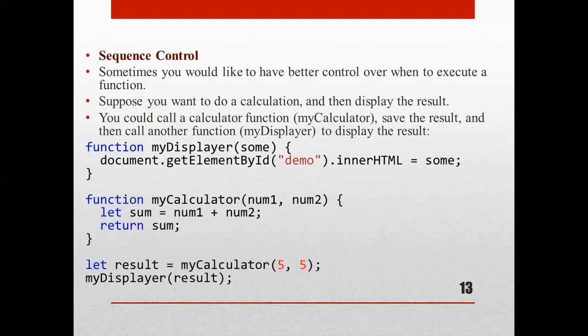Next is sequence control. Sometimes you would like better control over when to execute a particular function. For example, if you want to do a calculation and then display the result, you could first call a calculator function like myCalculator, save the result, and then call another function like myDisplay to display the result. The myDisplay function uses document.getElementById('demo').innerHTML to render the sum.